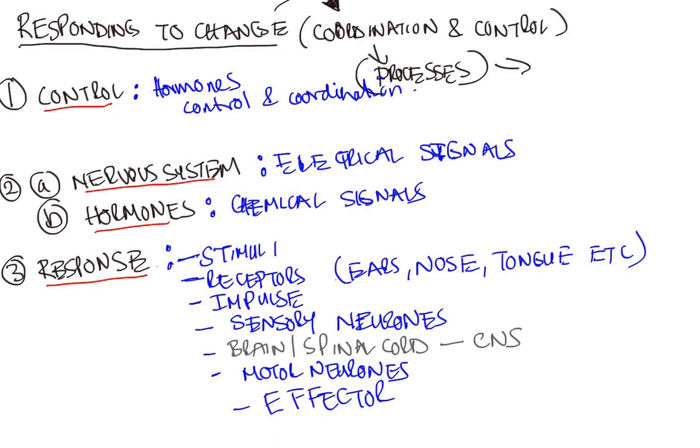Okay, so in summary, we've looked at how our bodies respond to change. There's an element of control—the nervous system and the endocrine system are involved and a response is generated. For control, it's the hormones, which are chemical signals that control and coordinate what's happening inside our bodies. We also have an external system that takes advantage of the nervous system.